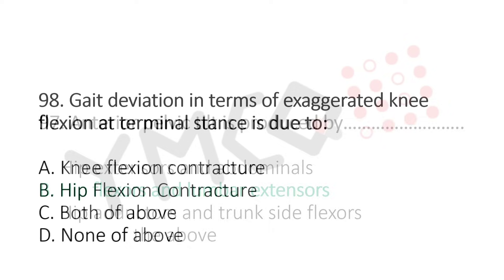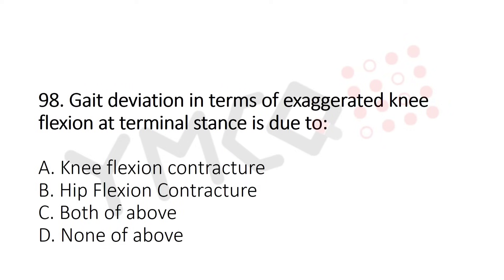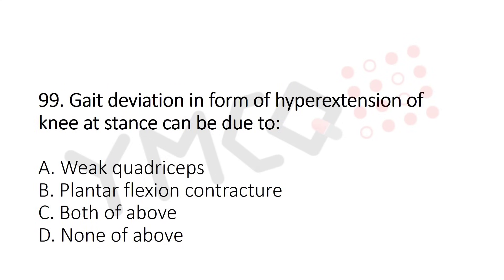Question 98: Gait deviation in terms of exaggerated knee flexion at terminal stance is due to — option A: knee flexion contracture, option B: hip flexion contracture, option C: both of the above, option D: none of the above. The answer is option C: both of the above.